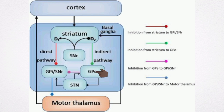The external globus pallidus then sends inhibitory connections to the subthalamic nucleus, and the subthalamic nucleus sends excitatory inputs to the cortex.